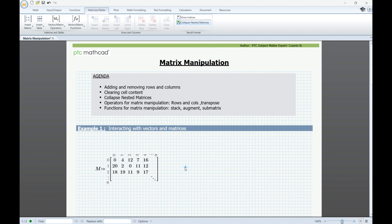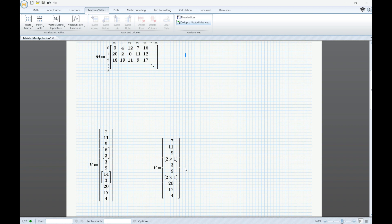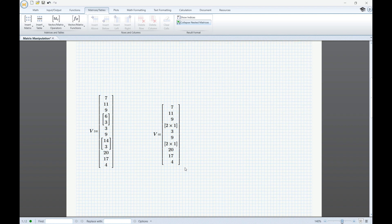And next to the indices option, we have the collapse nested matrices button that can be used when dealing with nested arrays. We have here an example of a nested array, and if we press the collapse nested matrices option, you can see that the vectors are expanded, and we can fully see the values.